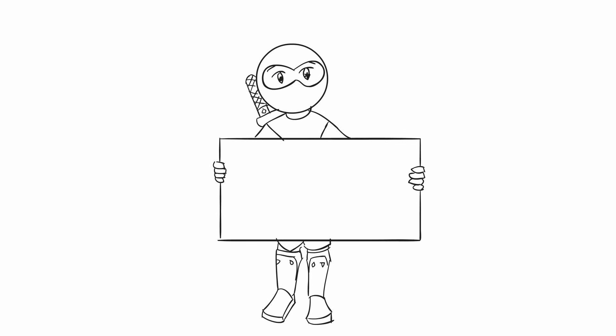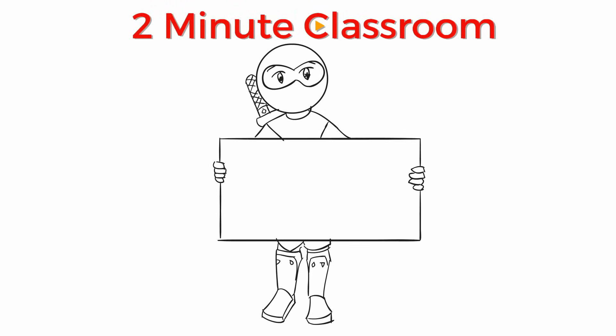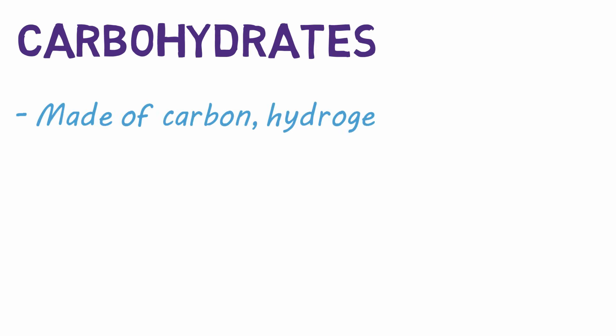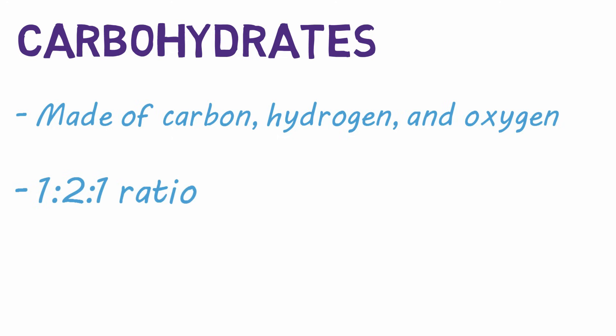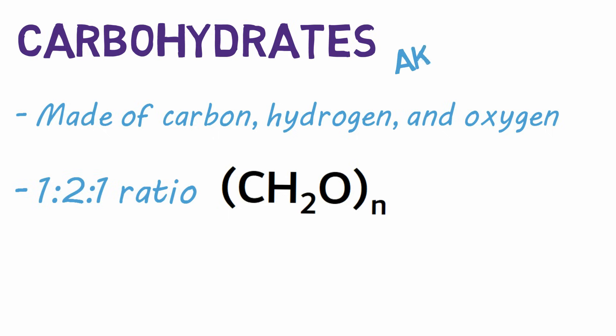Thanks for stopping by. This is 2 Minute Classroom and today we're talking about carbohydrates. Carbohydrates are a macromolecule made up of carbon, hydrogen, and oxygen in a 1 to 2 to 1 ratio — one carbon for every two hydrogens and one oxygen. They are also known as sugars and have several key functions in living organisms.